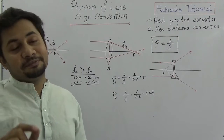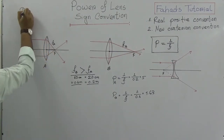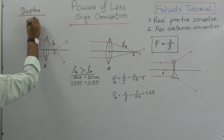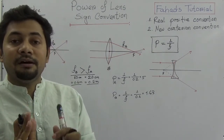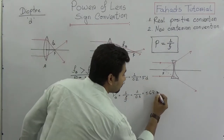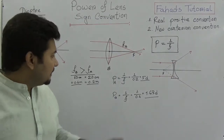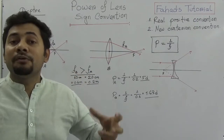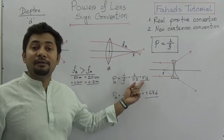The unit of power of a lens is the diopter — you must know this word. It is expressed by the small letter D. So we say lens A has 5 diopters and lens B has 1.67 diopters. If you know the focal length of any lens in meters, you can find the power of that lens.